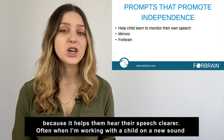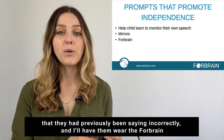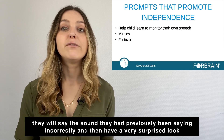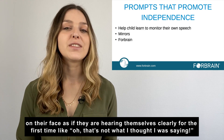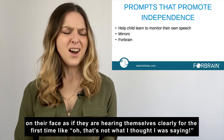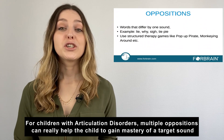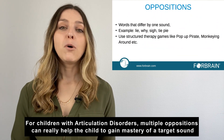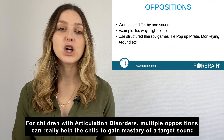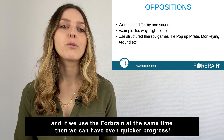Often when I'm working with a child on a new sound that they had previously been saying incorrectly, I'll have them wear the Forebrain. They will say the sound that they had previously been saying incorrectly and then have a very surprised look on their face, as if they are hearing themselves clearly for the first time — like 'oh, that's not what I thought I was saying.' For children with articulation disorders, multiple oppositions can really help the child gain mastery of a target sound, and if we use the Forebrain at the same time, then we can have even quicker progress.